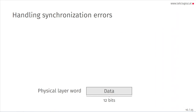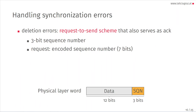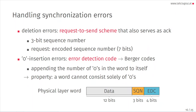Our physical layer word is 12 bits of data. We handle deletion errors with a request-to-send scheme that also serves as acknowledgement — three bits of sequence number are appended to the data, and for requests the sequence number is encoded, adding another seven bits. For zero insertion errors, we use an error detection code called Berger code, which appends the count of zeros in the word to itself. This has a nice property: a word cannot consist only of zeros, because if you have only zeros, you append that count which is obviously non-zero. So if we receive a word that is all zeros, we can immediately identify it as a mistake.